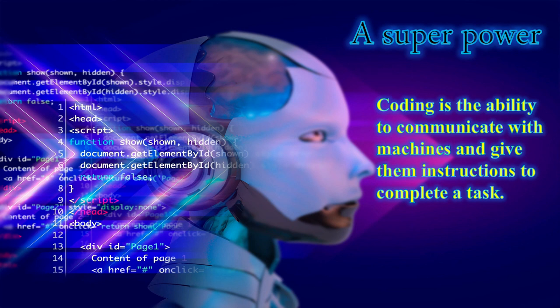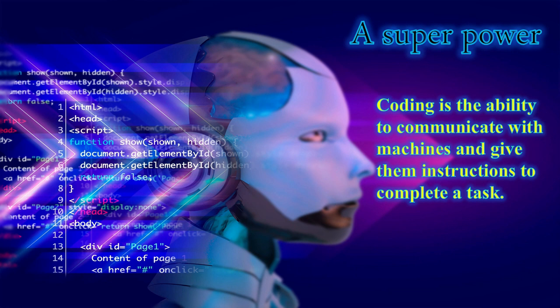The next section is about a superpower. Coding is the ability to communicate with machines and give them instructions to complete tasks. If you know how to code, how to work with computers and programming languages, this is a superpower — an advantage that most people don't have.